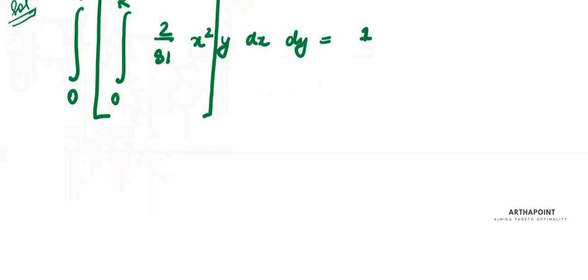So, this will give me 2 by 81 is just a constant, so I will keep it aside. Integration of x square will be x cube by 3 from 0 to k and then whatever answer I will get, I will integrate that from 0 to k over y.